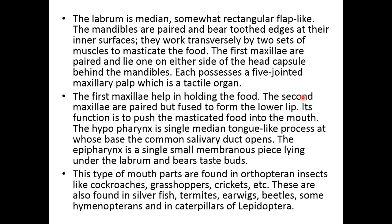The first maxillae are hardened and lie one on either side of the head capsule behind the mandibles. Each possesses a five-jointed maxillary palp with a tactile function. The first maxillae help in holding the food. The second maxillae are hardened but fused to form the lower lip. Their function is to push the masticated food into the mouth. The hypopharynx is a single median tongue-like process through which the salivary duct opens. This type of mouthparts is found in orthopteran insects like cockroach, grasshopper, crickets, and also in silverfish, termites, earwigs, beetles, some Hymenoptera, and caterpillars of Lepidoptera.